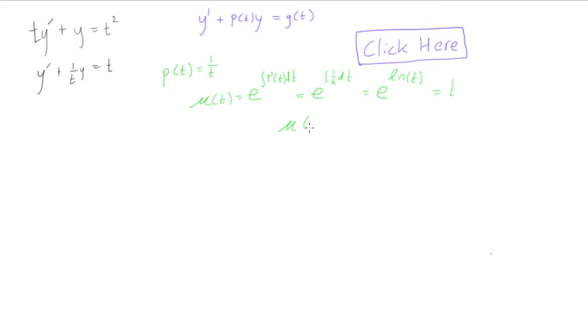So we can just write that here. Mu of t is equal to t. And then mu prime of t would then just be equal to 1.